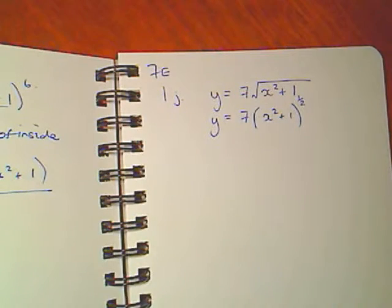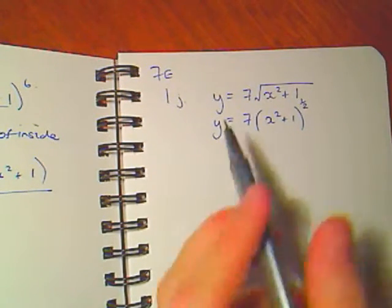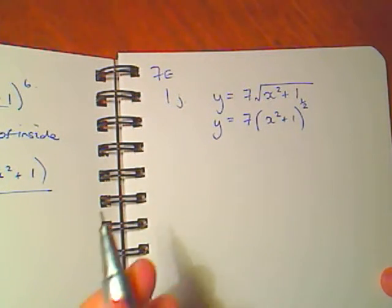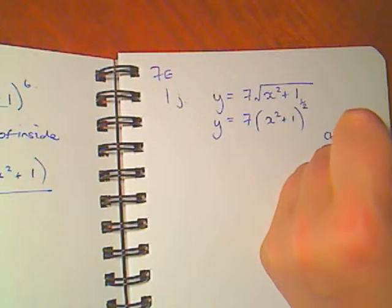Well now I have something I'd be able to make a decision about how I would find the derivative. I have a function to a power. So what I want to use here is the chain rule.